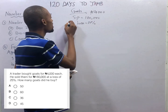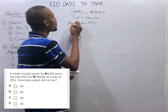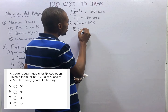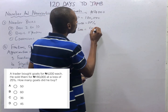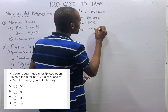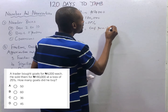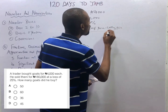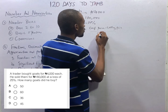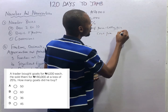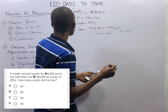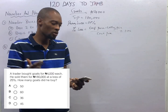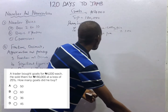This is a percentage loss. Percentage loss equals cost price minus selling price, over cost price, times 100. Whether you are calculating percentage loss or percentage profit, we always divide by the cost price. Take note of that.